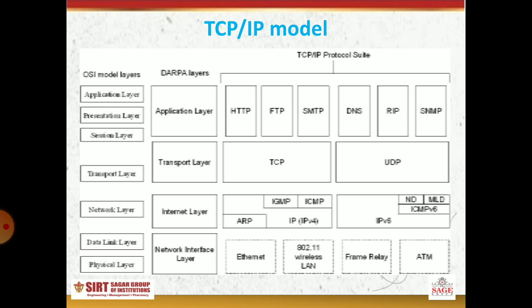In the TCP IP model, application layer protocols are HTTP, FTP (File Transfer Protocol), SMTP (Simple Mail Transfer Protocol), DNS, RIP, SNMP, etc. The transport layer works the same in both OSI and TCP IP models. In the TCP IP model, transport layer protocols are TCP and UDP — Transmission Control Protocol and User Datagram Protocol. TCP is used for connection-oriented communication and UDP for connectionless.